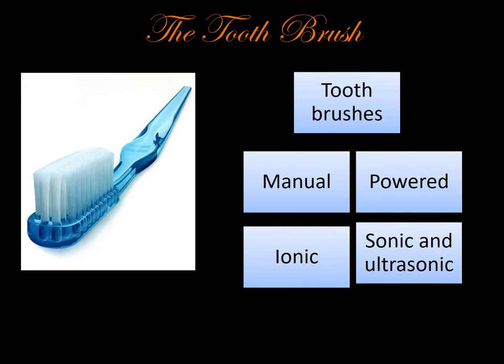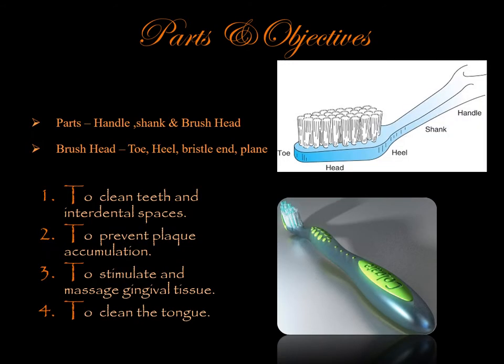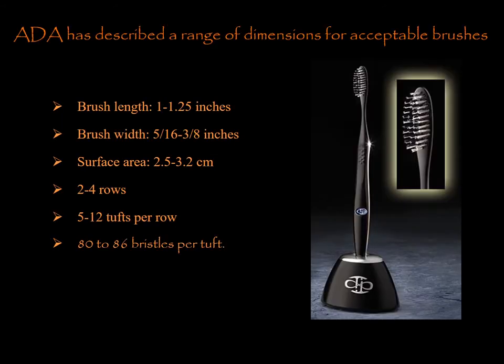Toothbrushes are of different types: manual, powered, ionic, sonic, and ultrasonic. Parts of a toothbrush consist of the handle, shank, and brush head. The brush head consists of the toe, heel, bristle tufts, and the planes. Objectives include: to clean teeth and interdental spaces, prevent plaque accumulation, stimulate and massage gingival tissue, and clean the tongue. The ADA has prescribed a range of dimensions for acceptable brushes: brush length 1 to 1.25 inches, brush width 5/16 to 3/8 inches, surface area 2.5 to 3.2 cm², 2 to 4 rows, 5 to 12 tufts per row, and 80 to 86 bristles per tuft.